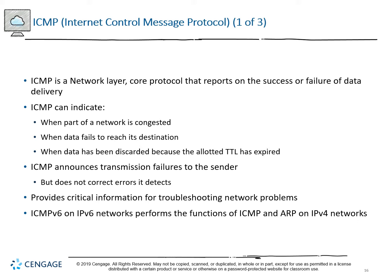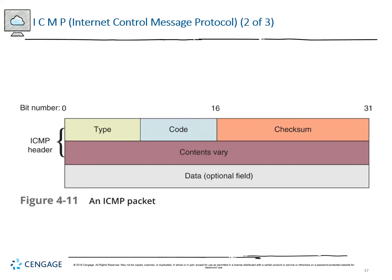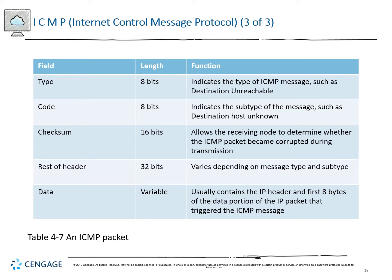An ICMP packet contains type, code, checksum, and variable contents based on what's being sent back. The proper header tends to be around 64 bits, and the data is variable as well. Internet routing works hierarchically — if pathed correctly, traffic climbs to the top levels and internet backbones to reach smaller subnetworks quickly. This doesn't always happen due to pathing issues, infinite loops, or broadcast storms. ICMP then announces the error and tells you what type it was.